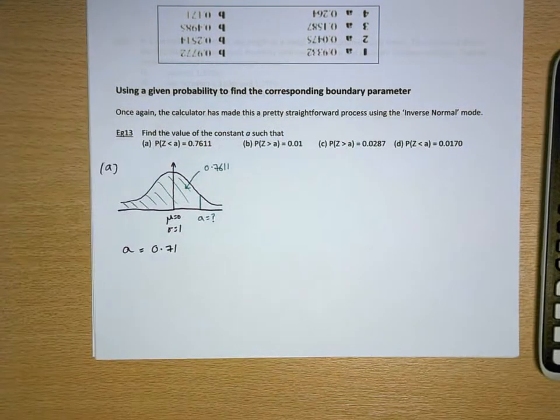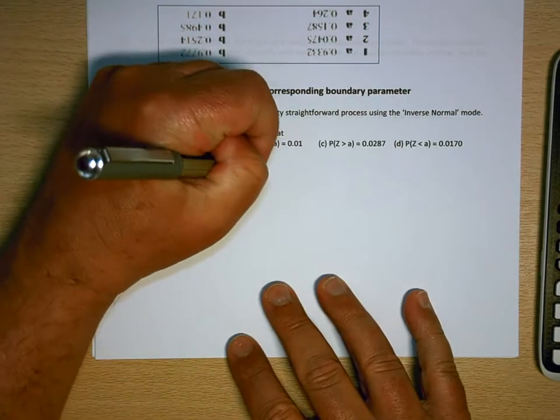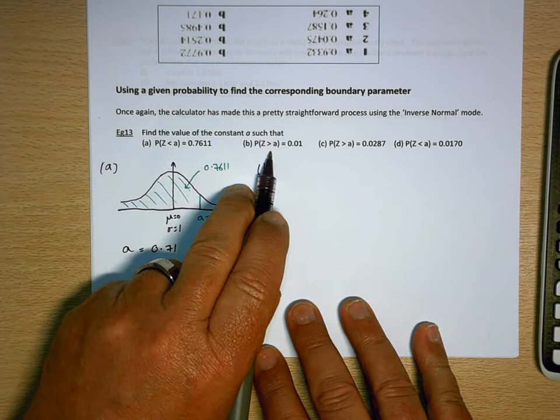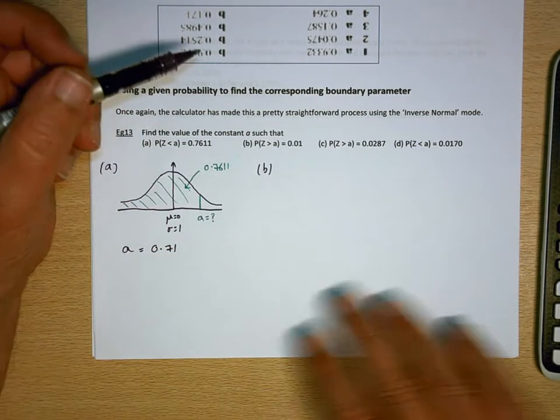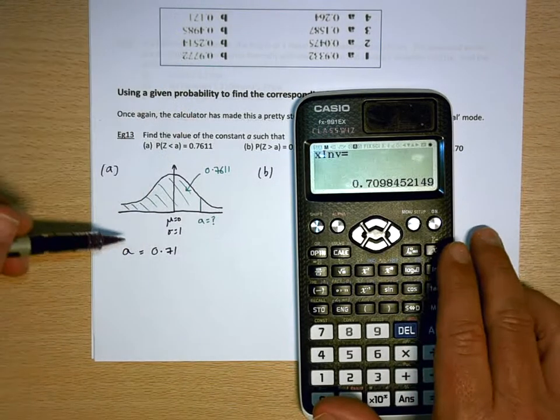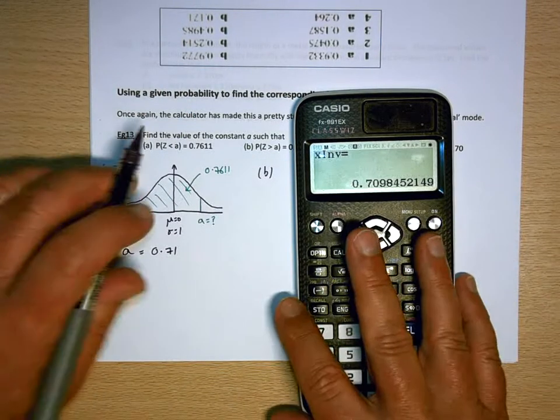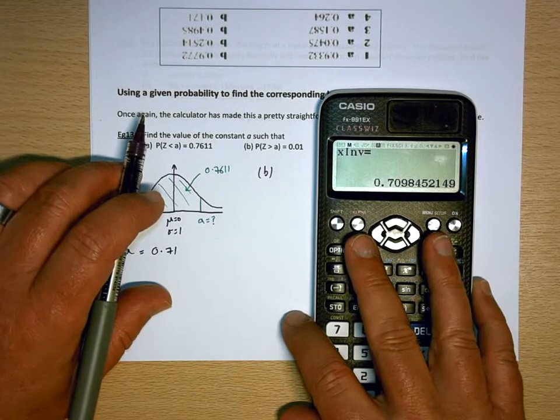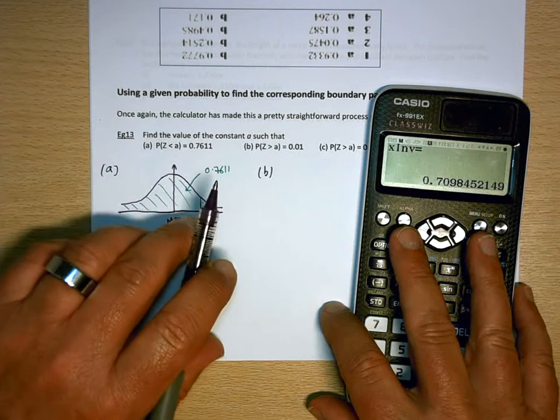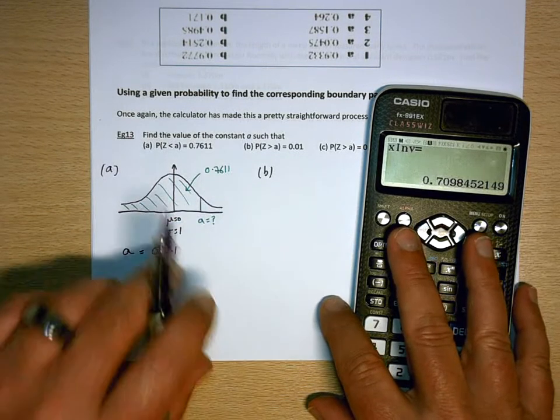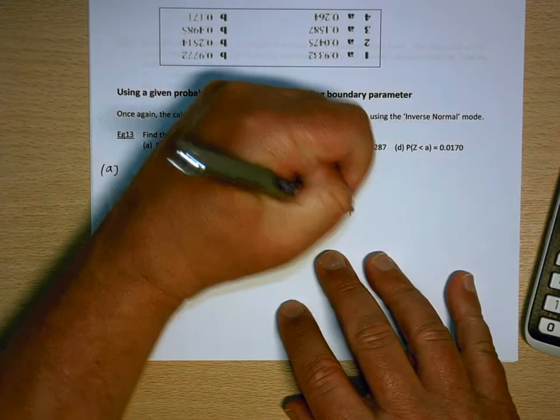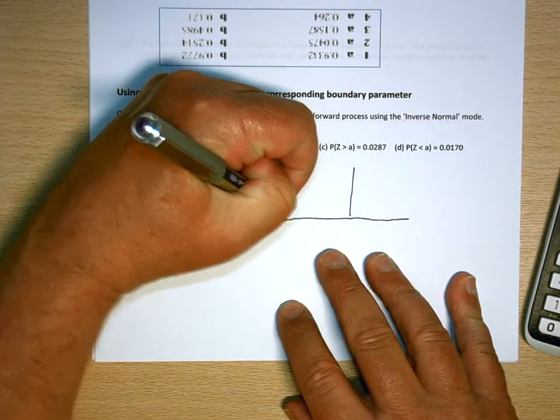Fly in the ointment comes when, just like in part B here, they're looking for a probability that is greater than rather than less than. Because the way that the figures are stored in your calculator is as a less than value. In the same way, if you think back to cumulative frequency in GCSE, the cumulative frequency curve would tell you a less than value rather than a greater than value. So as long as you spot that and remember that, you're okay.